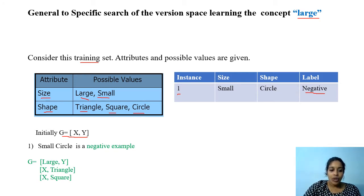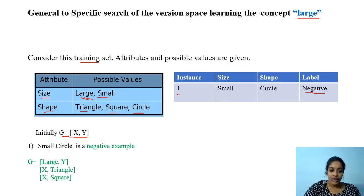Here, 'small' is getting matched with x. The possible specializations for x are large and small. But if we give small as a specialization, our hypothesis again accepts this negative instance. So we specialize G as {large, y}. This hypothesis now rejects the first instance.